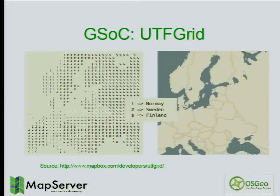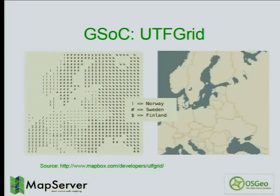One student worked on UTF Grid output. UTF Grid is a technique introduced by Mapbox with TileMill that enables more interactivity on top of raster tiles without passing all the vector information. Essentially it's like an ASCII graphic of the map — as you mouse over, it looks up in a string array in JavaScript and shows attributes like country names, without having to transmit all the vector data. This is not in 6.4 yet; the student completed the work and we're planning to polish and integrate it in version 7.